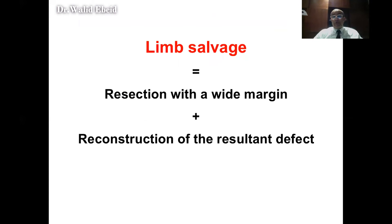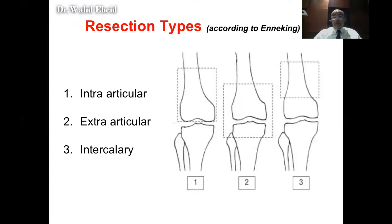Limb salvage is composed of two components: resection with a wide margin and reconstruction of the resultant defect. Types of resection are intraarticular resection — going through the joint to remove the distal femur or proximal tibia — extraarticular resection removing the tumor together with the adjacent joint when there is intraarticular extent, or intercalary resection when the tumor is in the middle of the bone away from the joint.